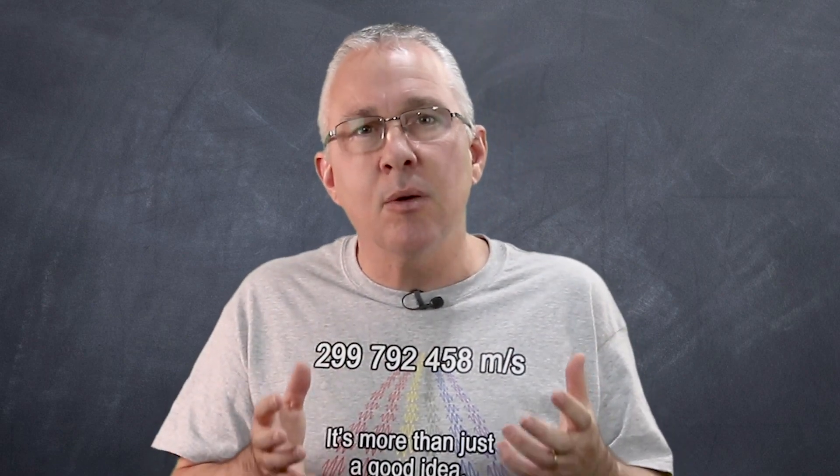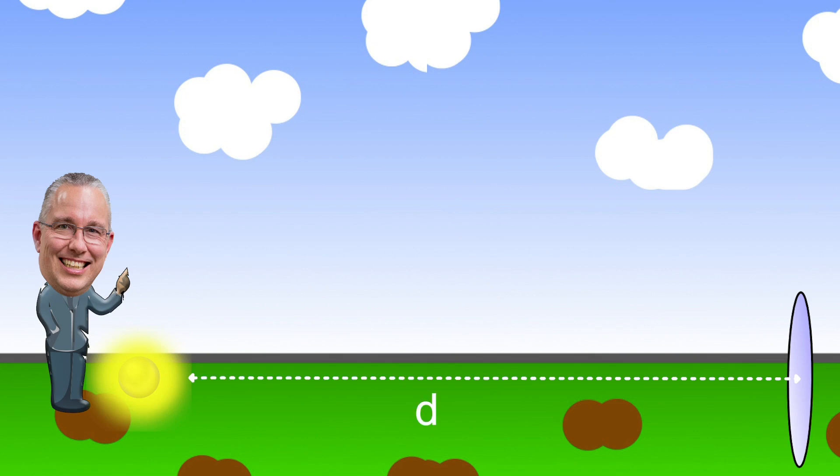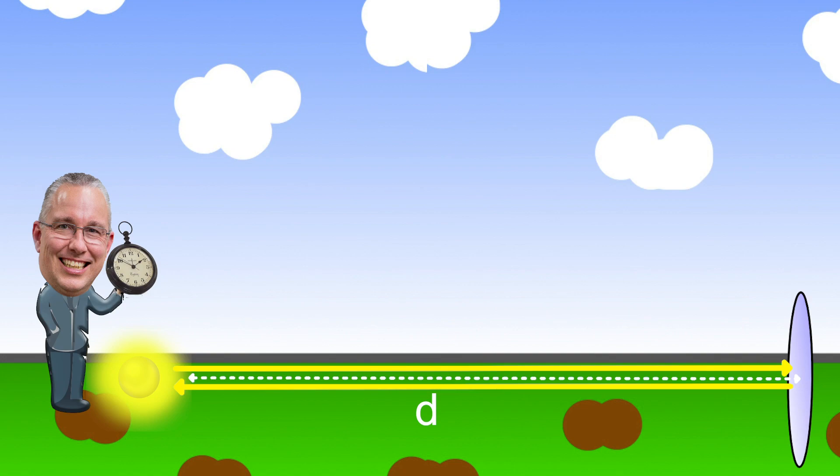Now, in essence, measure a set distance, have a really precise way of measuring the time of flight for that distance, in this case, a light beam, and then use the two values to determine the speed, distance over time.